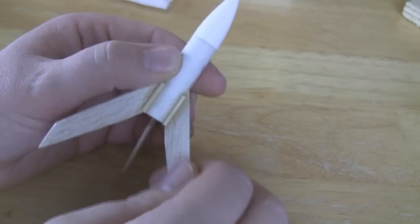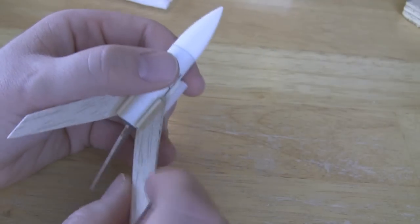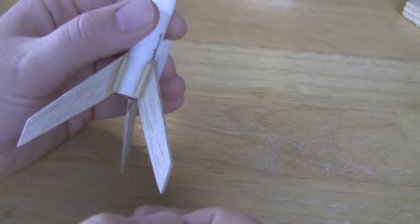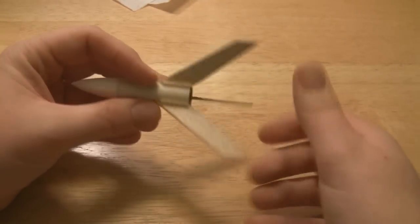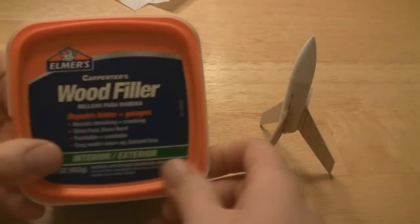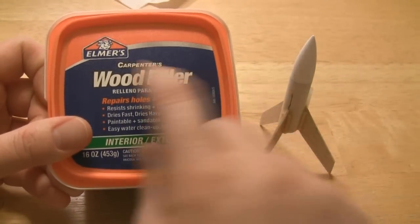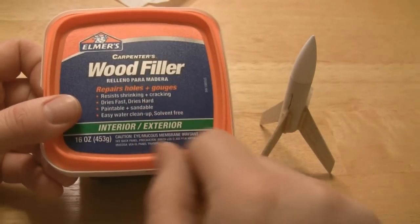I'm going to put on some homemade sealer to fill up the grain in these fins. It's time to fill the grain on these fins. Now, this isn't my trick. I don't remember if I saw it on another YouTube video or read about it. But basically, you get Elmer's wood filler. It's a water-based wood filler.